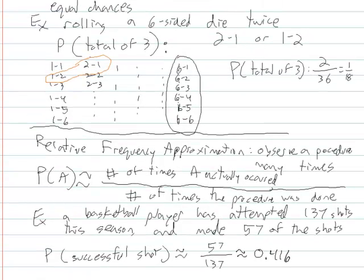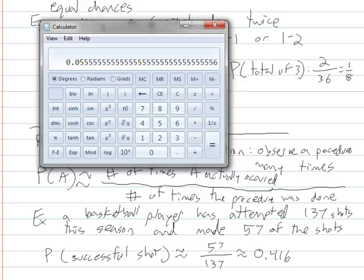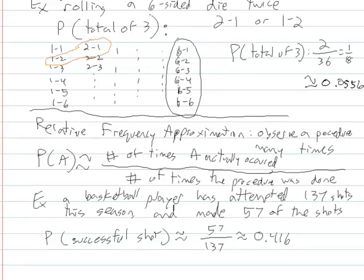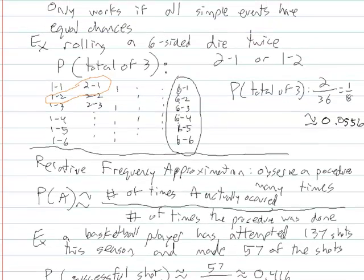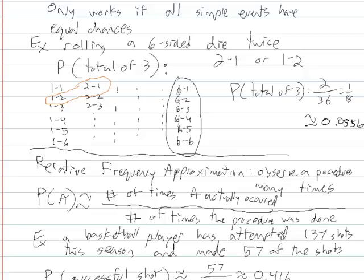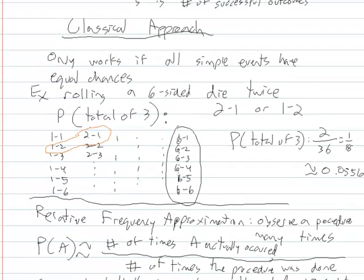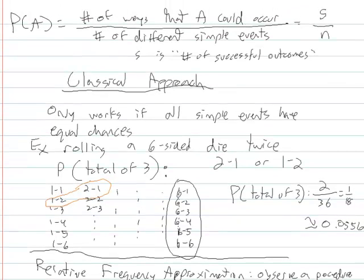With rolling the six-sided die, getting a total of 3, that 1/18 I could have put as a decimal as well - 1 divided by 18 was 0.0556. So we can approximate our probabilities as decimals or as fractions. But with rolling six-sided die, this is not an approximation - the probability is 1/18 assuming these are six-sided fair dice that are equally weighted. The basketball player, this is an estimation.